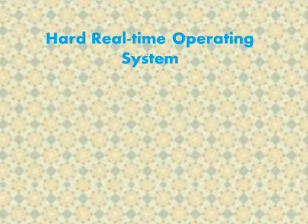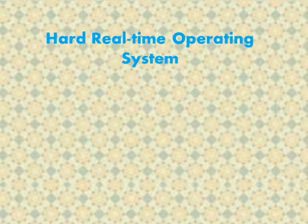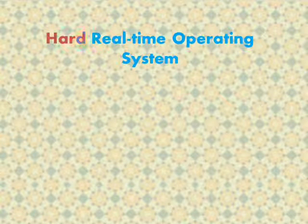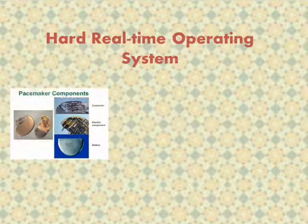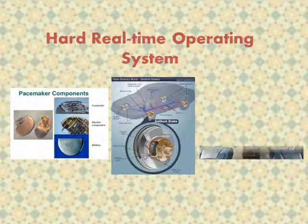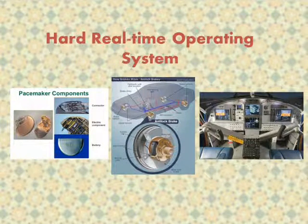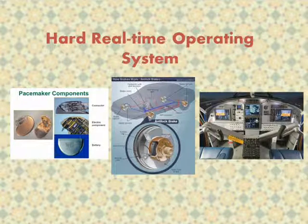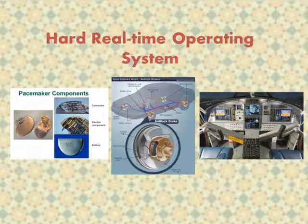A hard real-time system, also known as an immediate real-time system, is hardware or software that must operate within the confines of a stringent deadline. The application may be considered to have failed if it does not complete its function within the allotted time span. Examples of hard real-time systems include components of pacemakers, anti-lock brakes, and aircraft control systems.